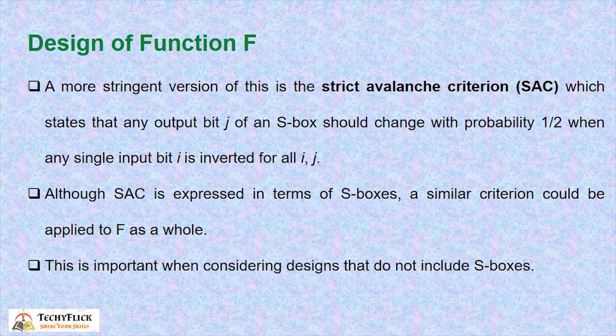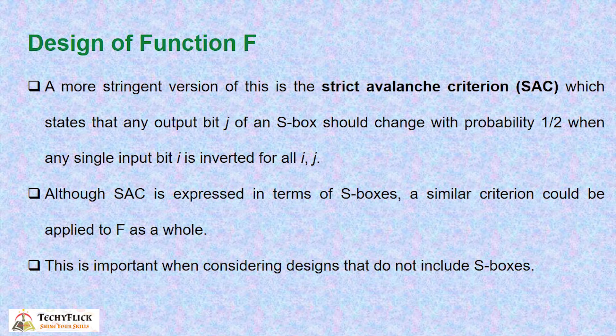A more stringent version of this is the Strict Avalanche Criterion (SAC), which states that any output bit of an S-box should change with probability one-half when any single input bit is inverted, for all i and j. Although SAC is expressed in terms of S-boxes, a similar criterion would be applied to F as a whole. This is important when considering designs that do not include S-boxes.